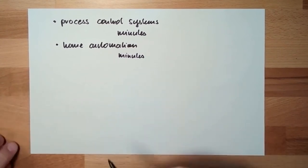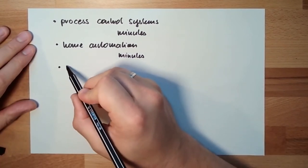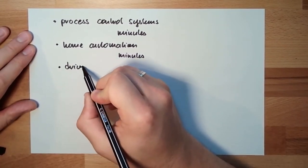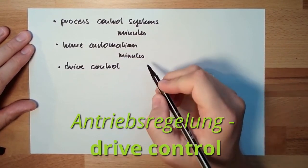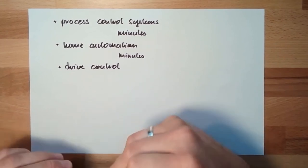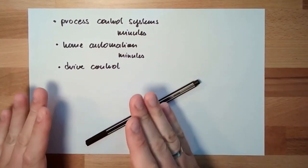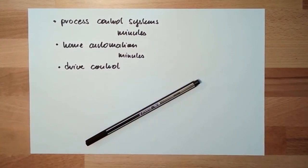Home automation, then we do have highly dynamic drive control. Drive controls, electrical drive, whatever drive, drive control. So we need to control torque, we need to control rotations per minute.